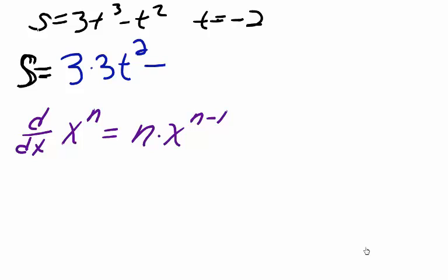And then we apply the power rule again for t squared, so we bring the 2 out in front, 2t to the power of n minus 1, where n equals 2, so 2t to the first. Simplifying, we have 9t squared minus 2t. So this is the derivative of our function s, and we call it s prime.